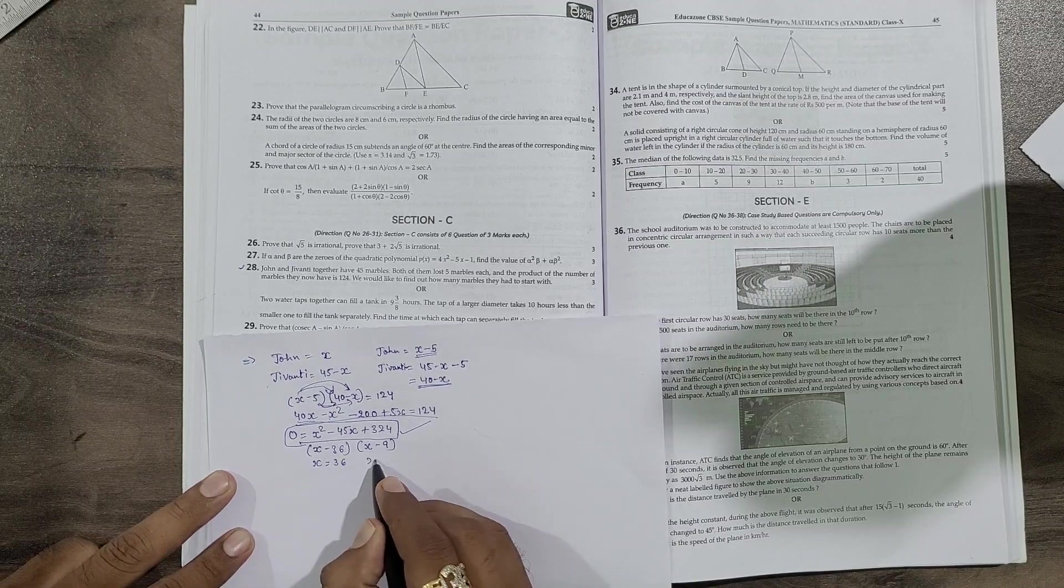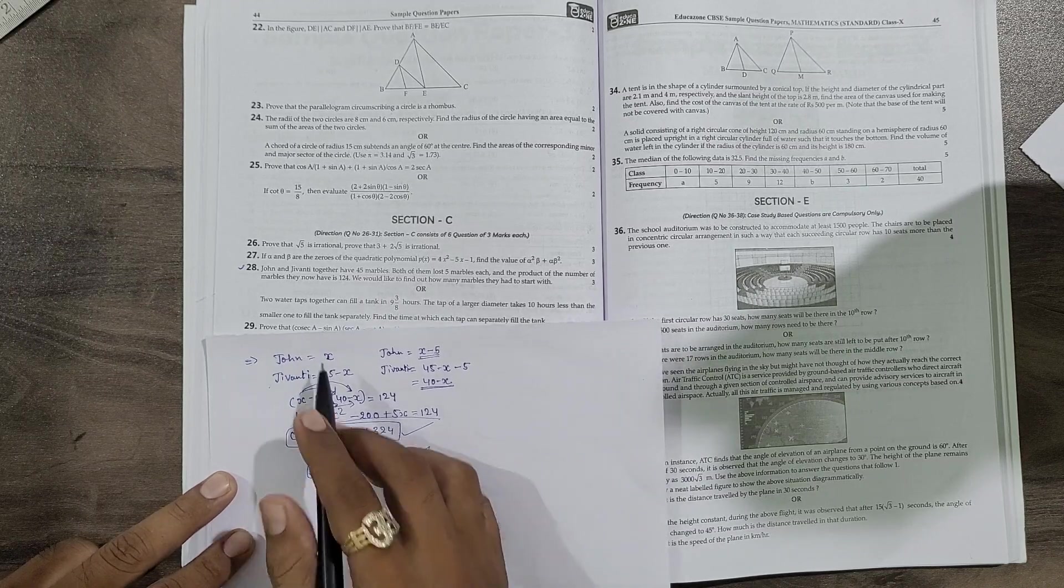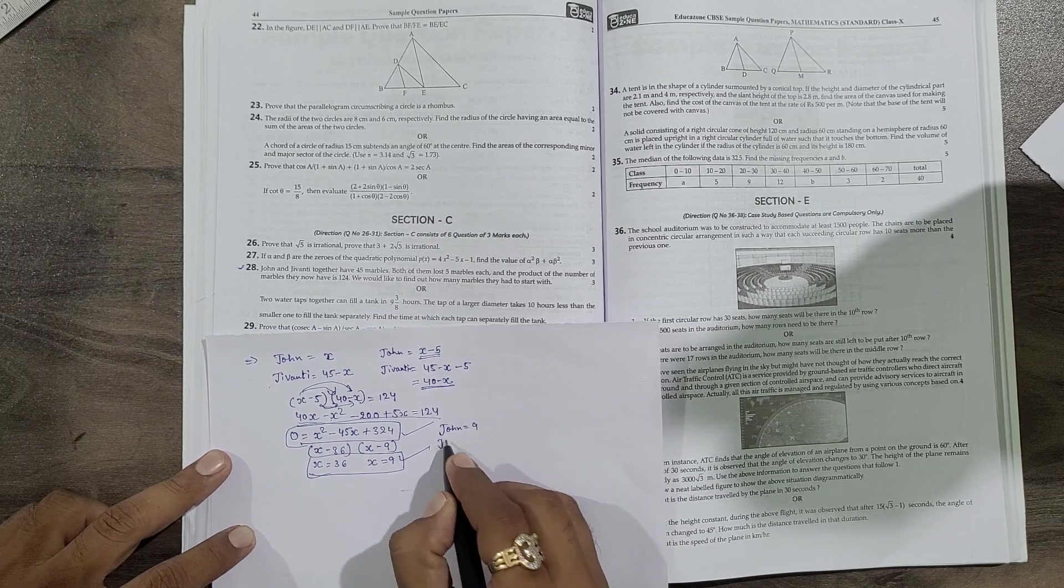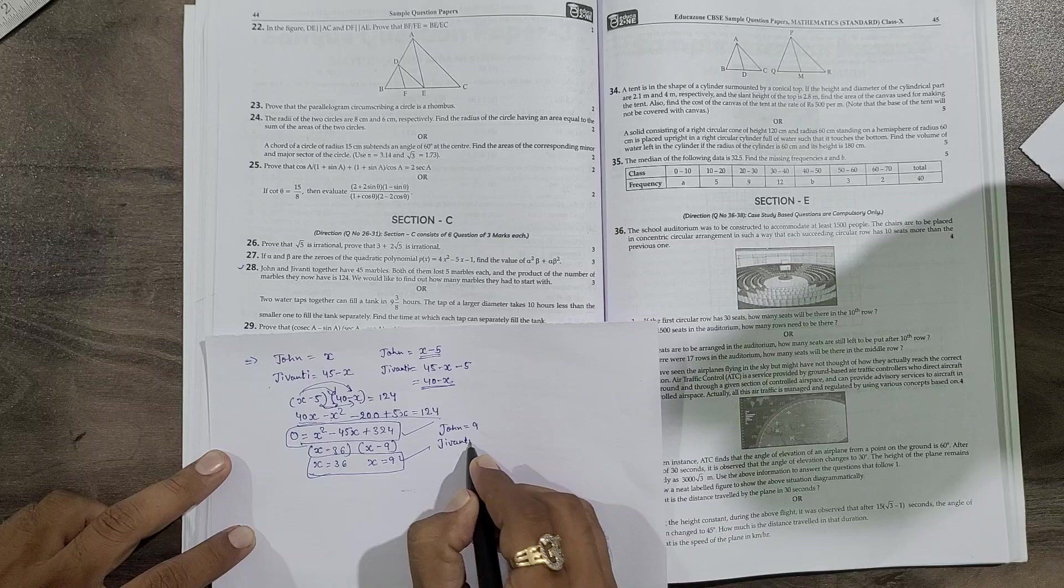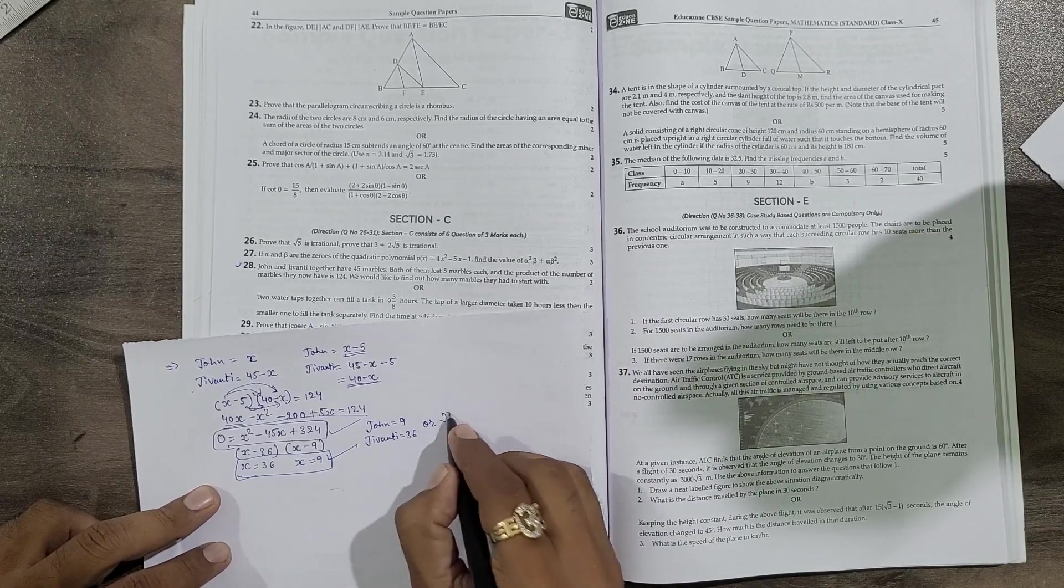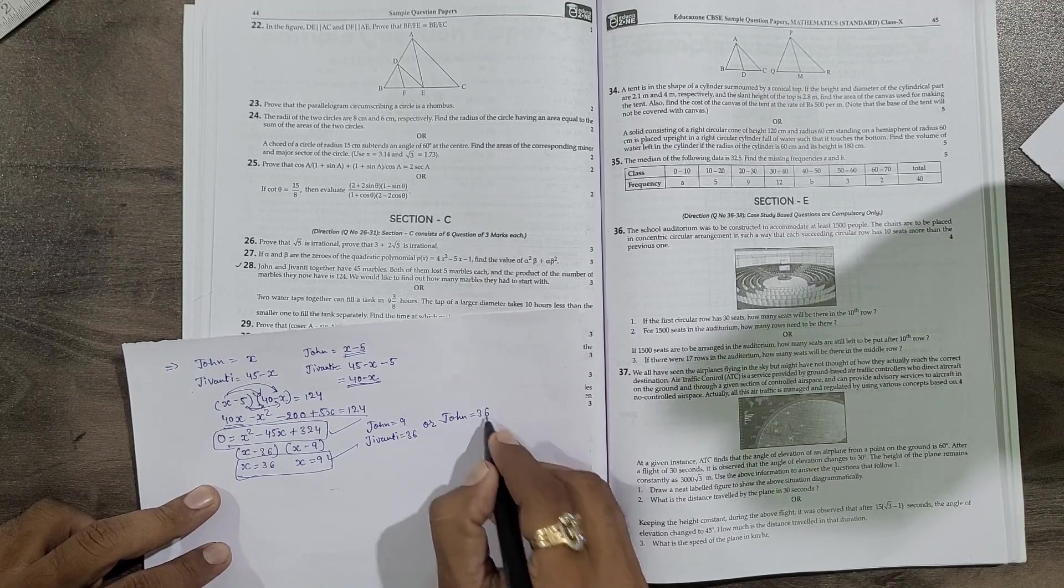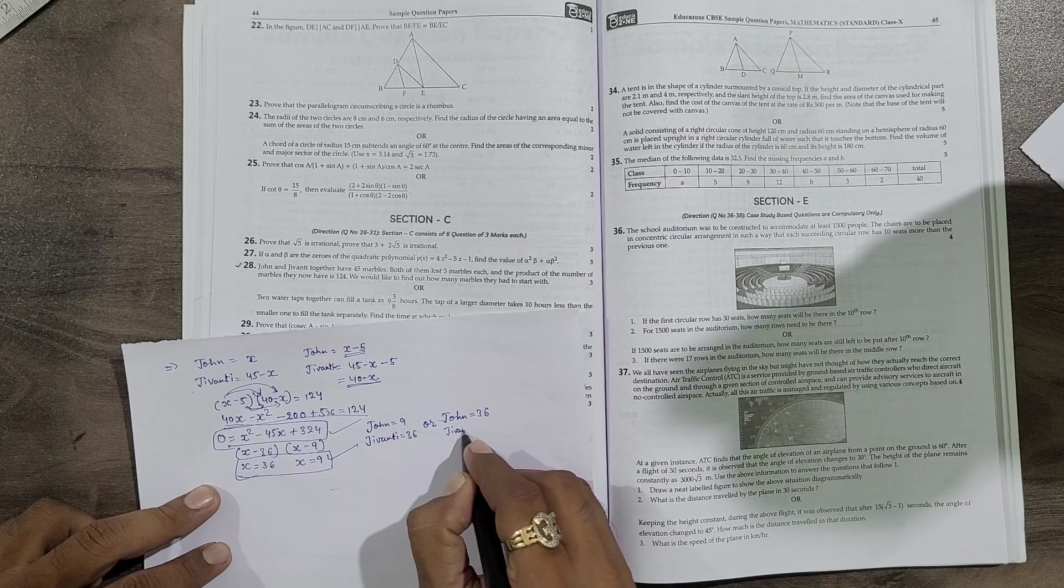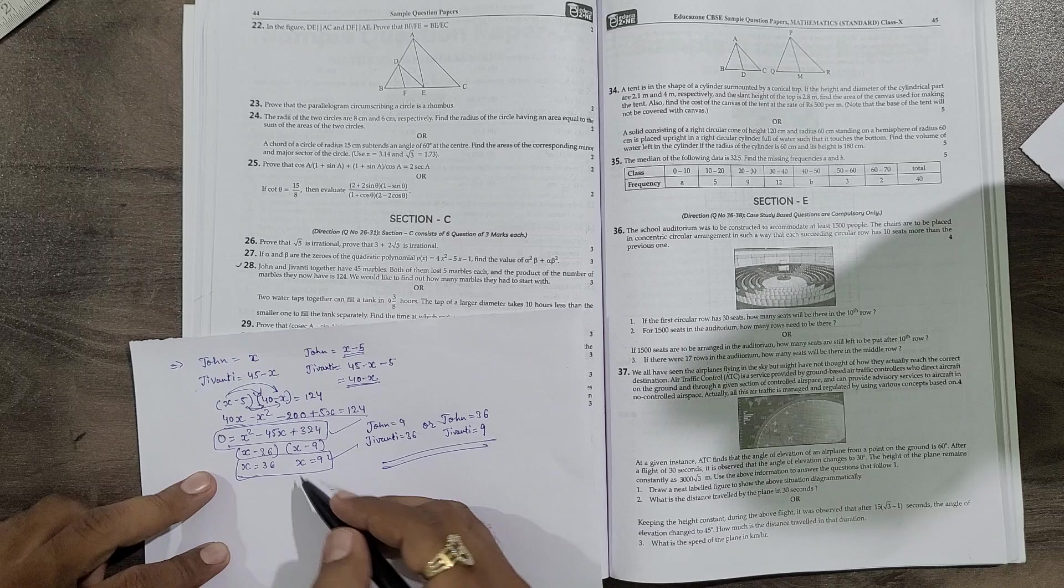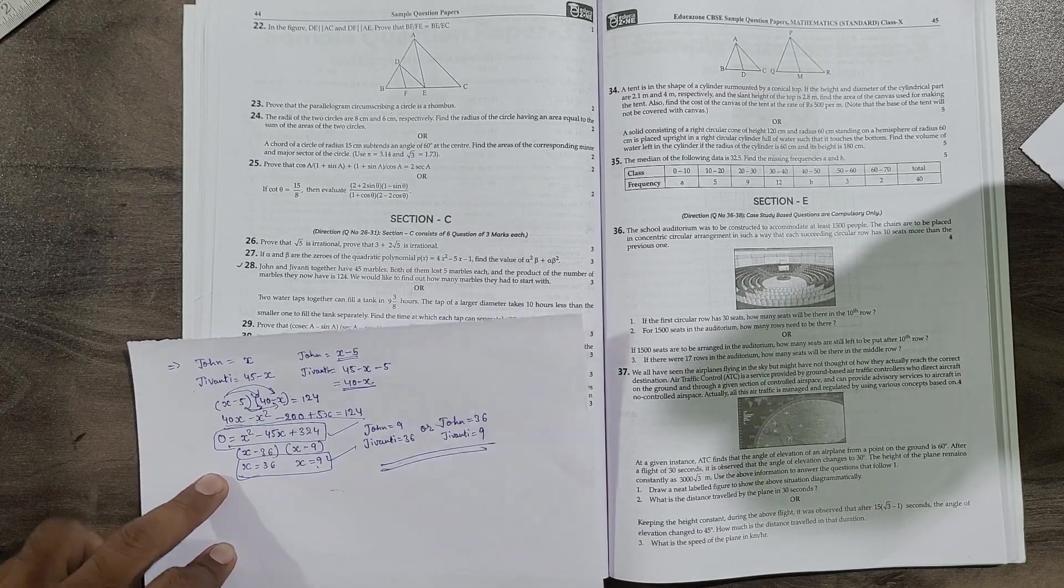So guys, here what you can do: you can say if John is having 9, then Jivanti equals to 36. Or the condition can change also, because we don't know perfectly. If John is having 36, then Jivanti will be having 9. So this way you need to write at the last, because this condition is not like John is having 36 and Jivanti 9 - it can interchange also.